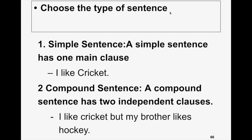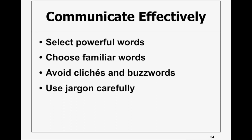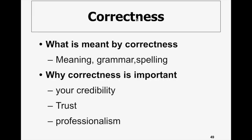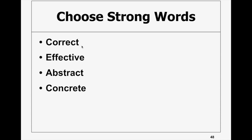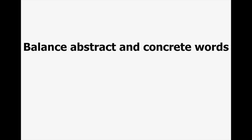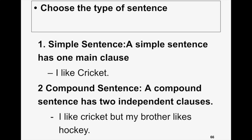The topic of words is now complete. To summarize: we discussed selecting powerful words, and correctness — words should be correct and effective. Between abstract and concrete, we said concrete words give better results. Now we move to the topic of sentences — choose the type of sentence. In English, just as there are many words, there are also varieties of sentences: simple, compound, complex. There are four types of sentences.